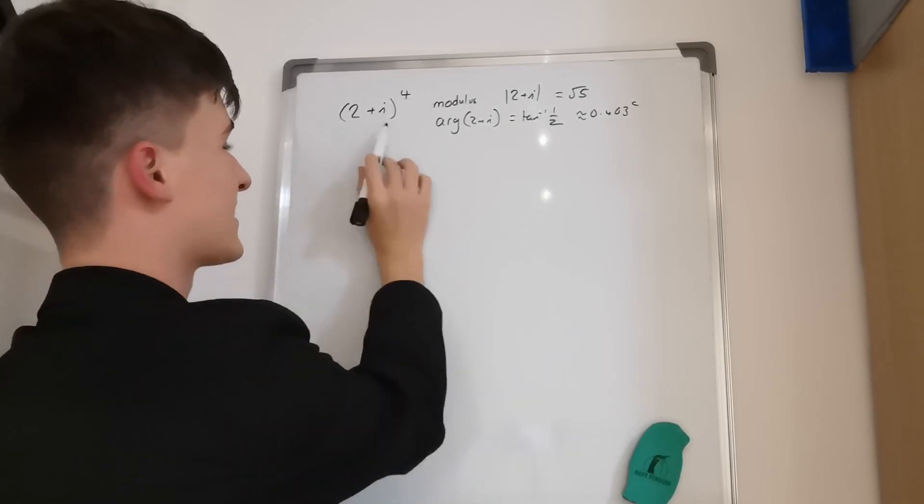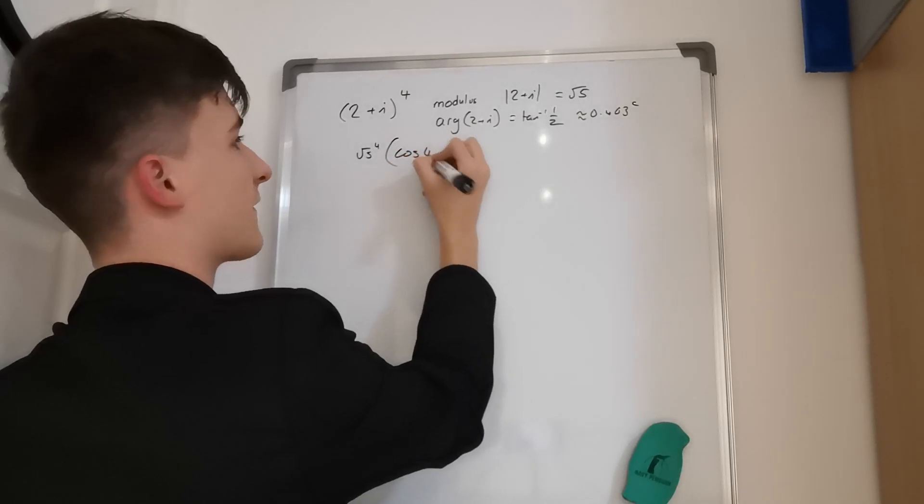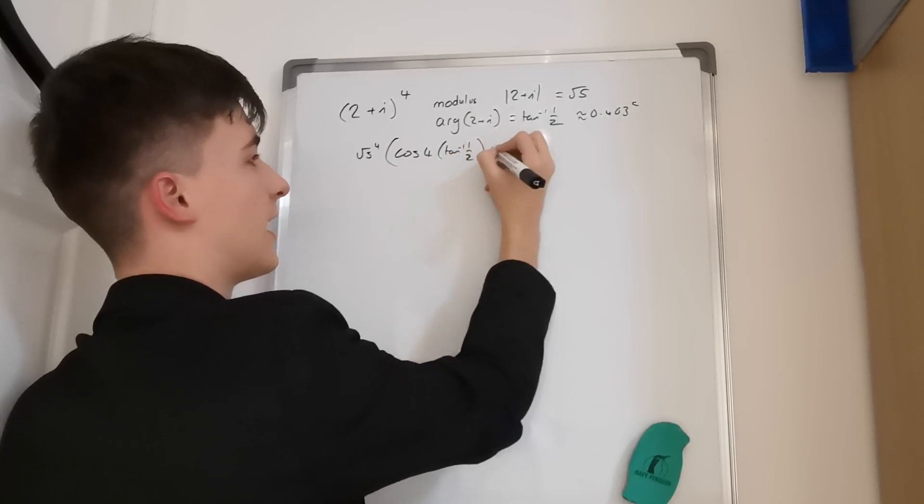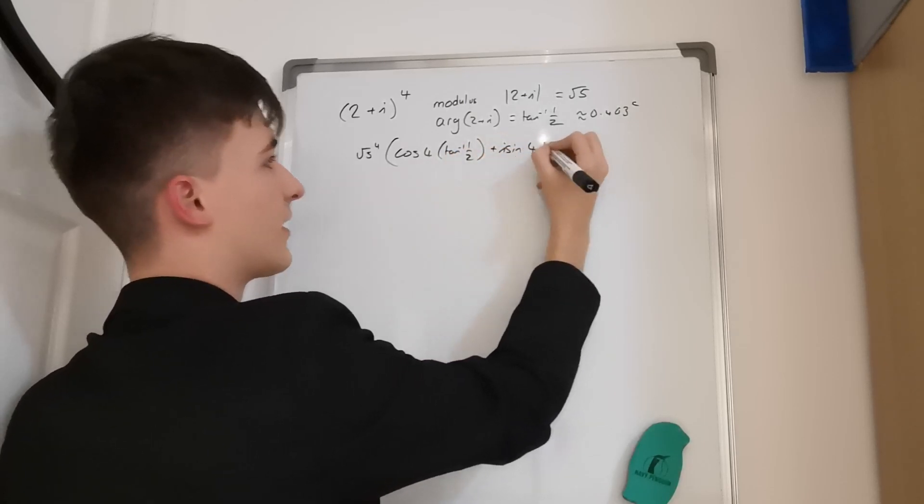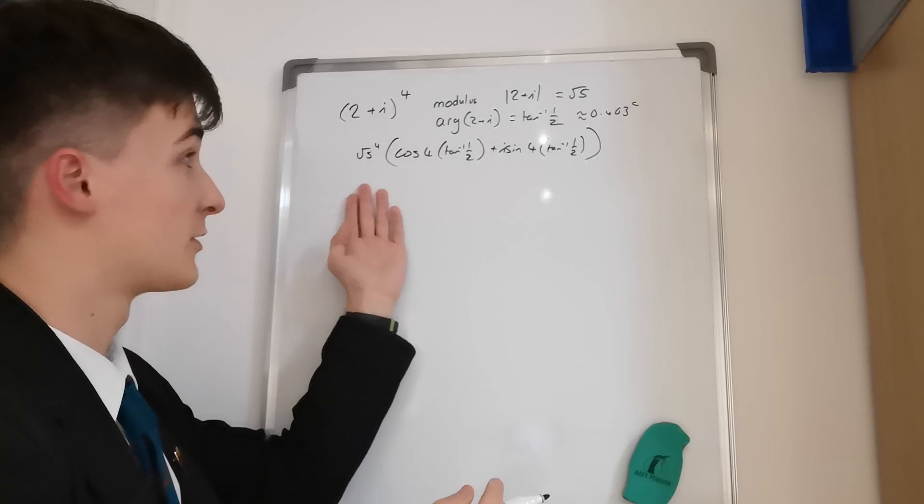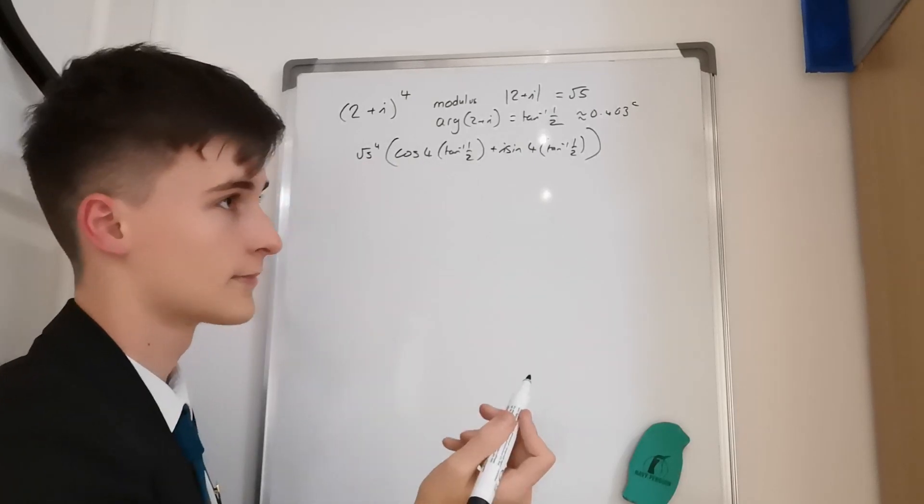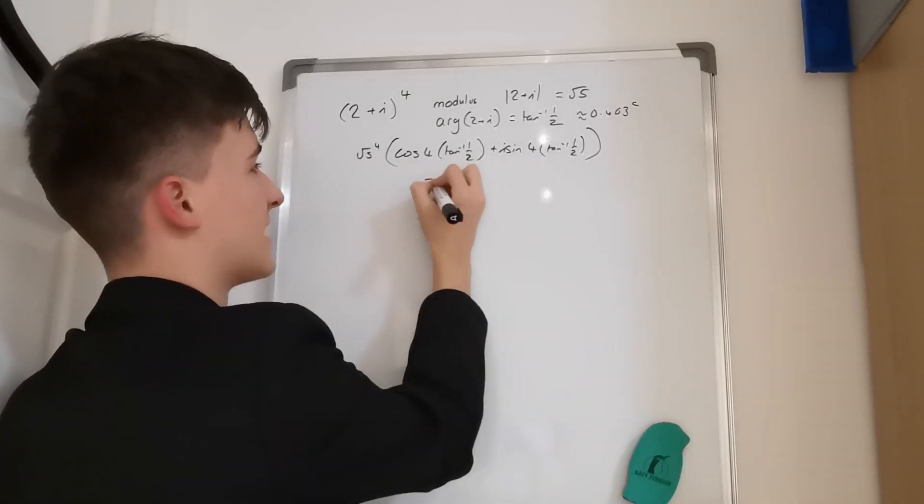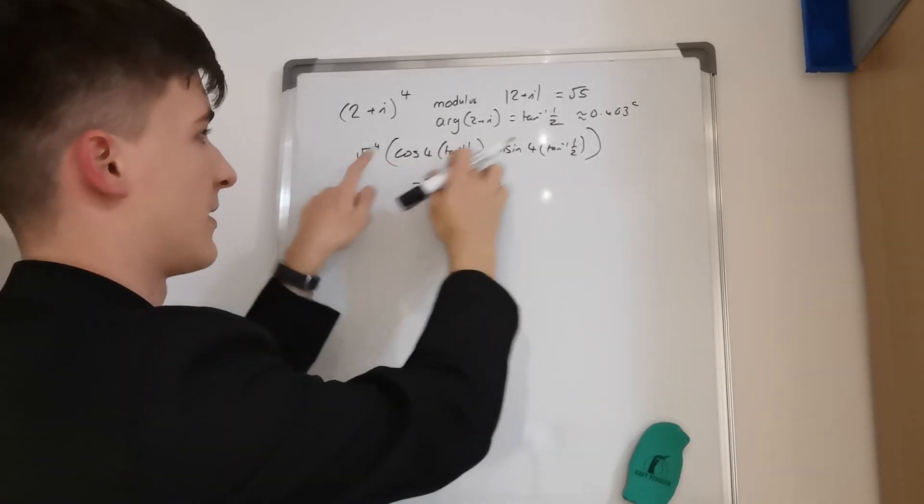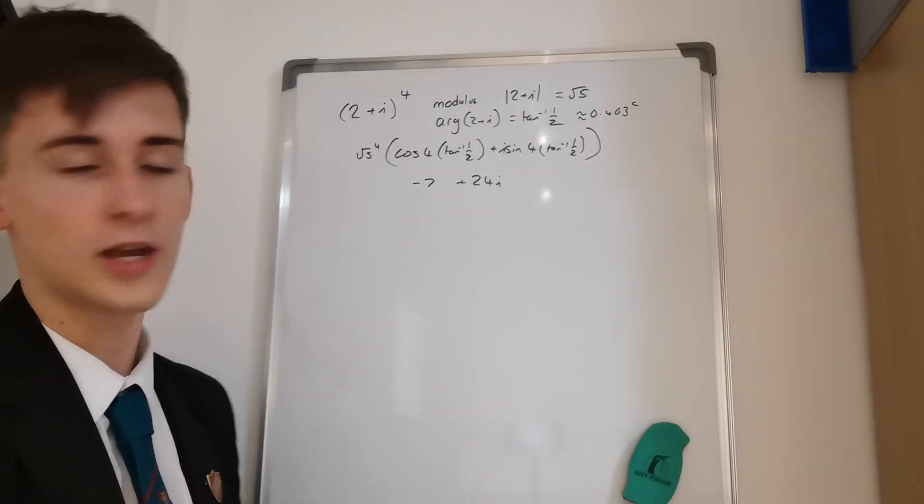So then what we can do is we can say that this is equal to (√5)^4 times cos(4 tan^(-1)(1/2)) + i sin(4 tan^(-1)(1/2)). And if you were to type that into a calculator you would then get, or if you were to work out each bit individually, you would then get -7 + 24i. That is when you work out that multiply by that, work out that multiply by that. That's part one, so that was the simple part.